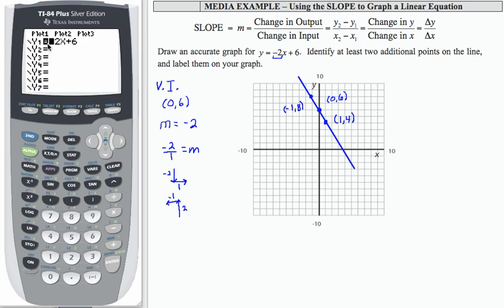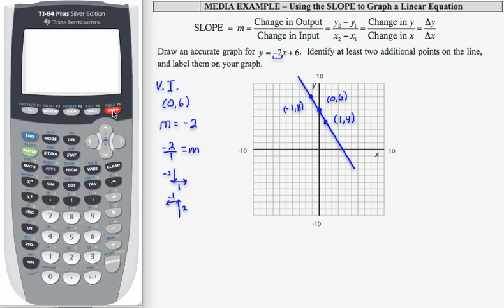Now, let's put that equation into y equals in our calculator, negative 2x plus 6, and let's use the table to verify the coordinates of the additional ordered pairs that we found.